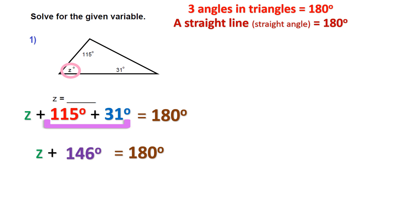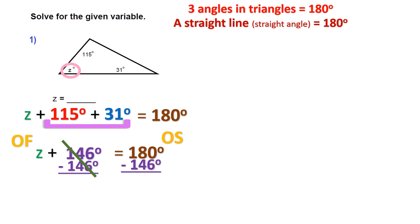It's back to algebra — opposite function on the opposite side. On the side where the variable is, I see I'm adding 146 to Z, so I subtract 146, which cancels those out. Then on the opposite side I subtract 146 from 180. Remember to borrow so you don't lose track. 10 minus 6 is 4, and 7 minus 4 is 3, giving us 34. So we're hypothesizing that Z equals 34.